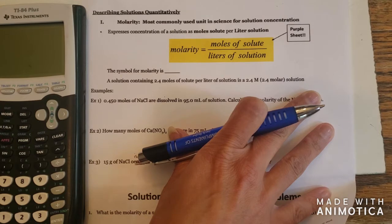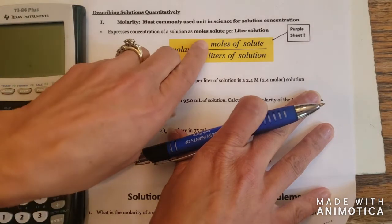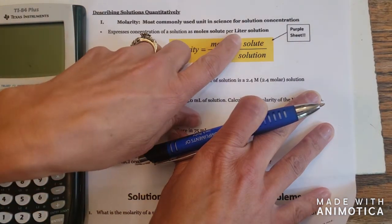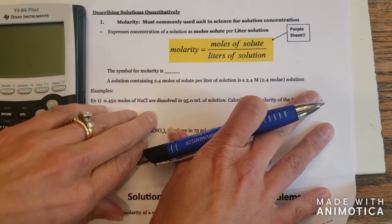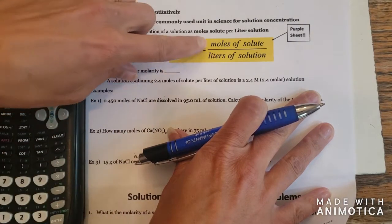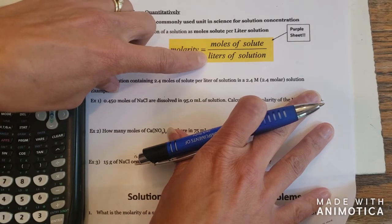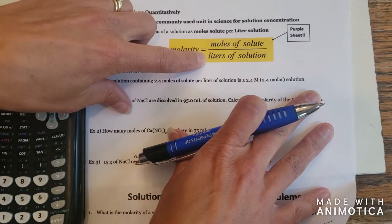Molarity describes the concentration of solution in terms of moles of solute per liter of solution, and that is important because if you're given any other unit besides moles, we will have to convert it to moles. And any other volume unit besides liters, you will need to convert that to liters.